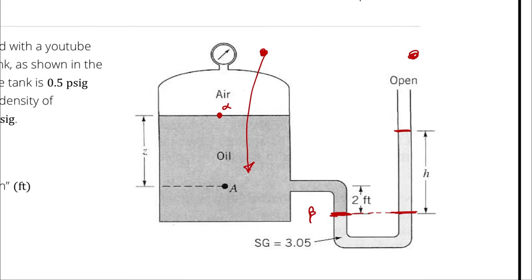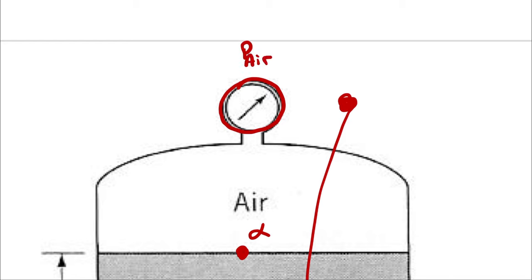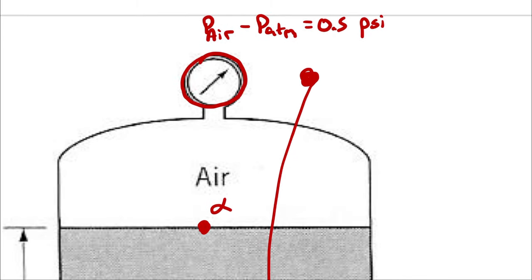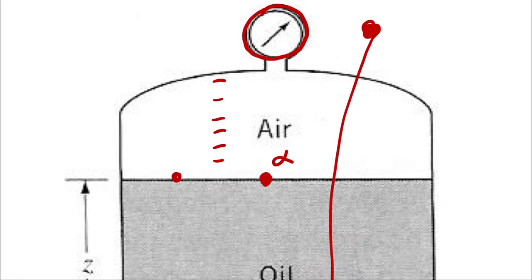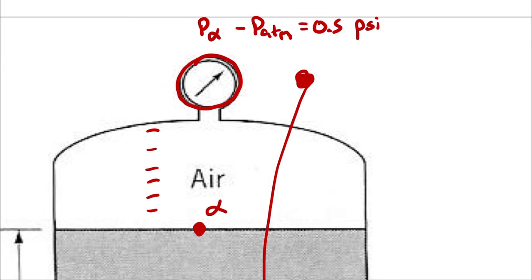Let's start by working from the gauge into the air and down through the oil. The pressure of the air is 0.5 psi G, meaning the absolute pressure of the air minus atmospheric pressure is 0.5 psi. Because the density of gases is so low relative to liquids, I'm going to assume that the pressure difference across the height of the column of air is negligibly small. Therefore, the pressure of the air is also the pressure at point alpha, so the absolute pressure at point alpha equals 0.5 psi plus atmospheric pressure.